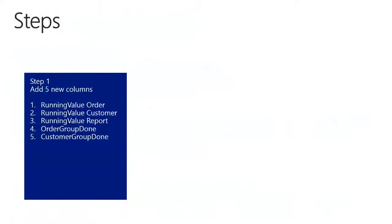In step number one, we're going to add five new columns to the report. We need the running value for the order group, the running value for the customer group, and the running value for the overall report. And we need to know when the order group is done, and we need to know when the customer group is done. So we need to add five new columns.